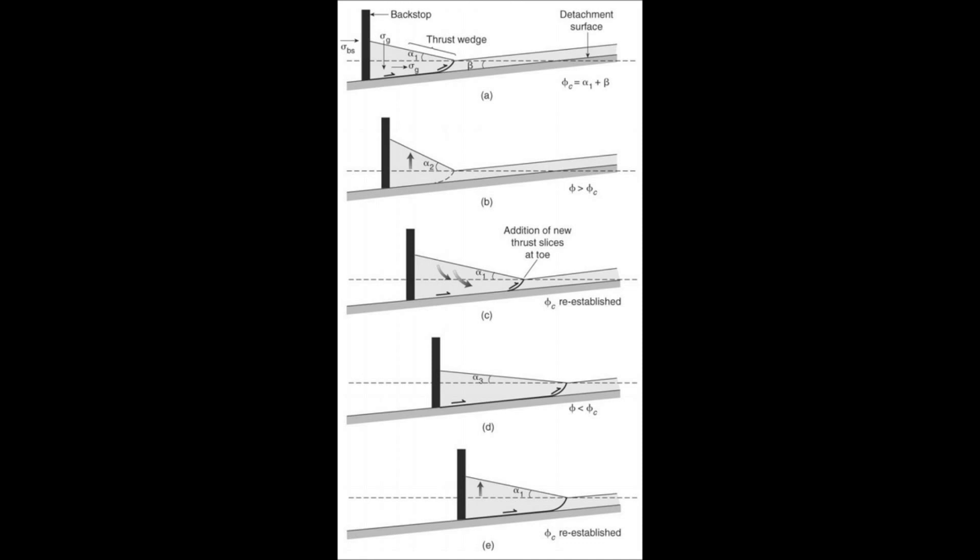Stress acting on the wedge is partly a horizontal boundary load caused by the backstop and is partly caused by gravity. If the backstop moves, as in figure B, the wedge thickens so the surface slope increases and the taper phi eventually exceeds phi-critical.